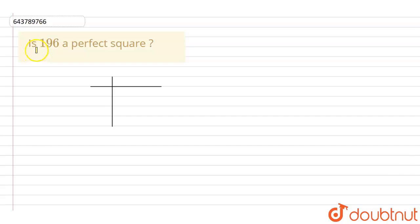In this question, it is given that we have to check 196 is a perfect square or not. So to check 196 is a perfect square or not, what we'll do is we'll write 196 over here. Now first of all, we'll divide it by 2.